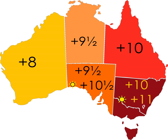The choice of whether to use DST is a matter for the governments of the individual states and territories. However, during World War I and World War II all states and territories used Daylight Saving Time. In 1968 Tasmania became the first state in peacetime to use DST, followed in 1971 by New South Wales, Victoria, Queensland, South Australia, and the Australian Capital Territory. Western Australia and the Northern Territory did not adopt it.